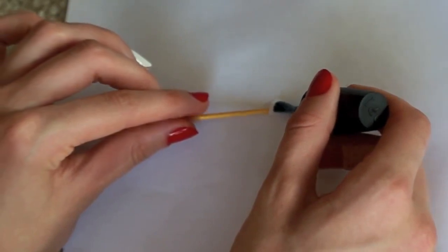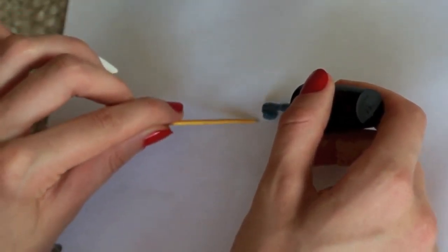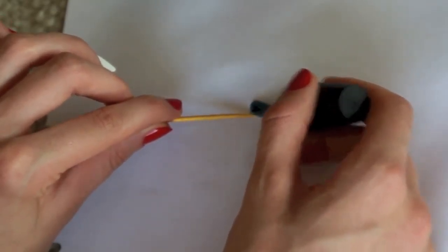Next it's time to color your hearts or stars. I'm using a blue polish, and to do this I'm also using a toothpick just to kind of help me move the star on the paper and make sure the polish gets on there evenly.